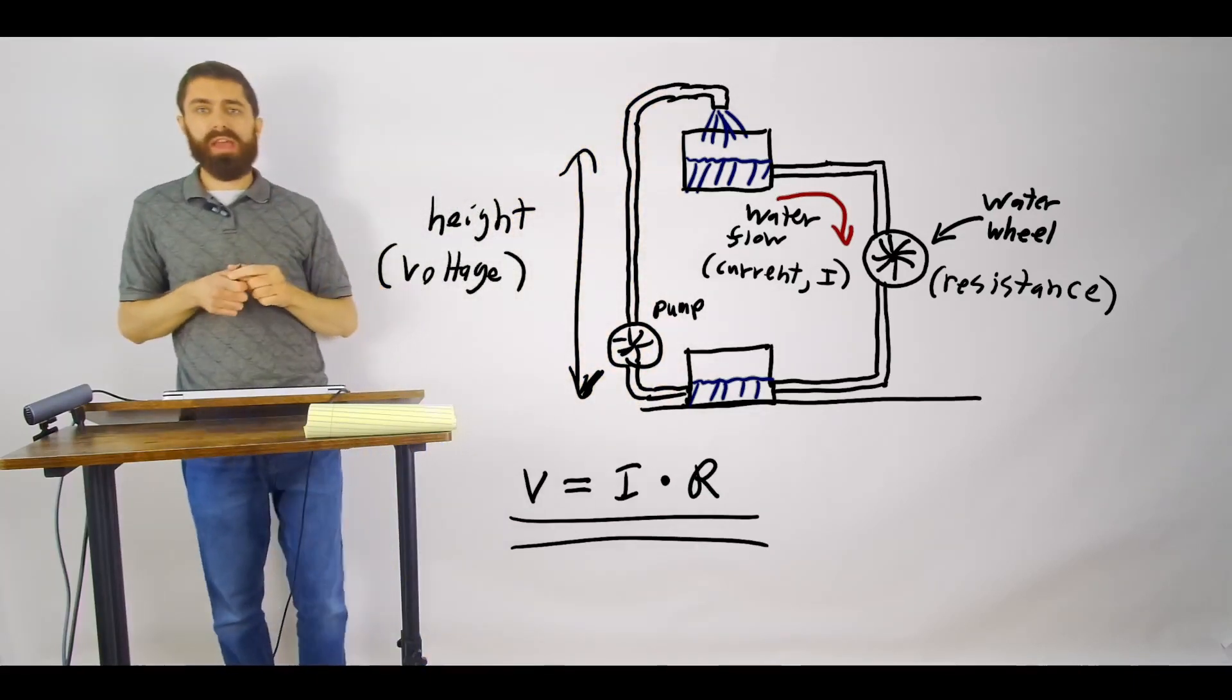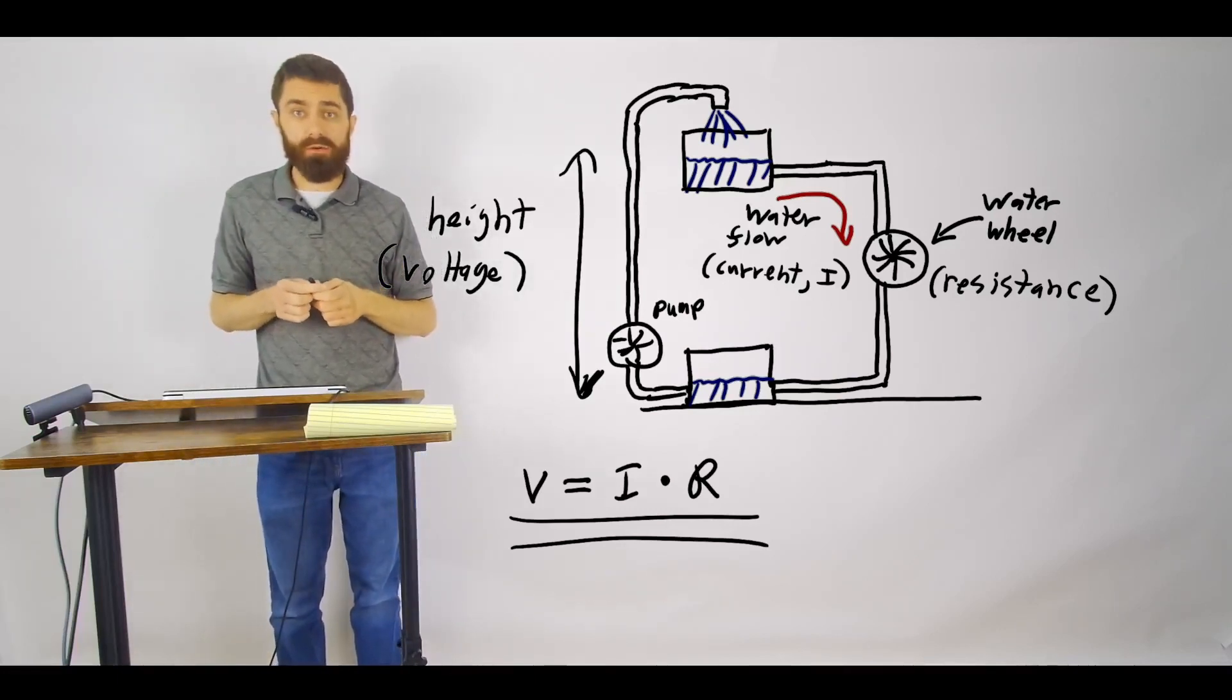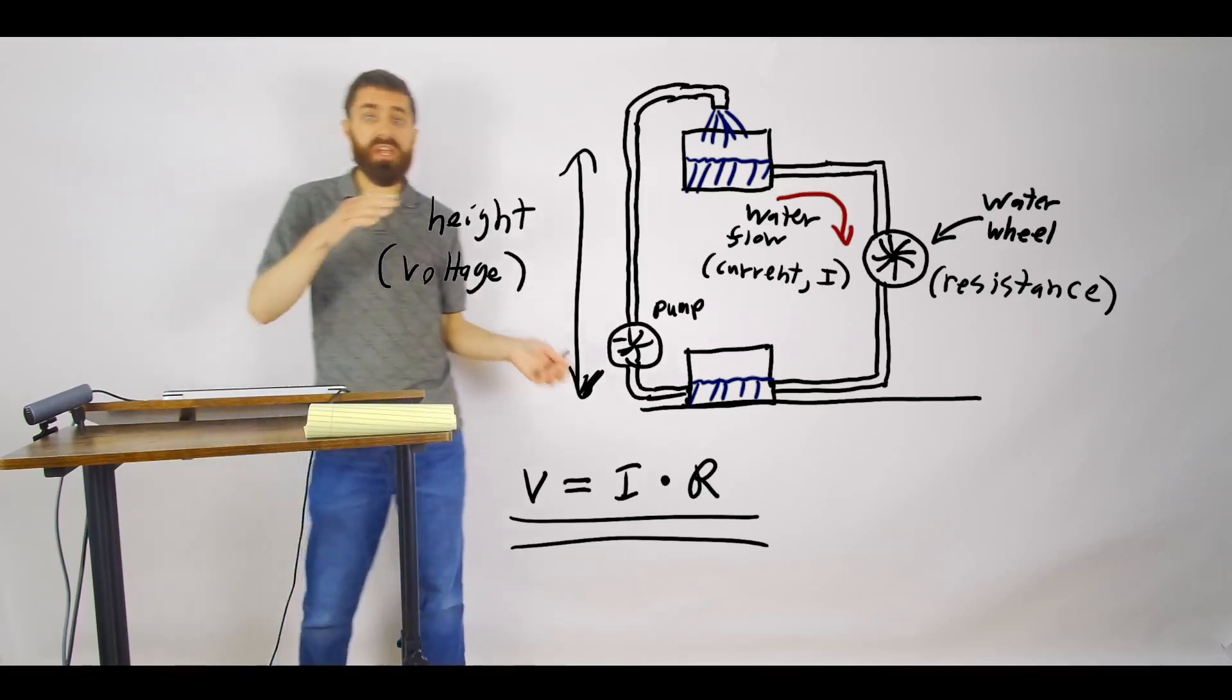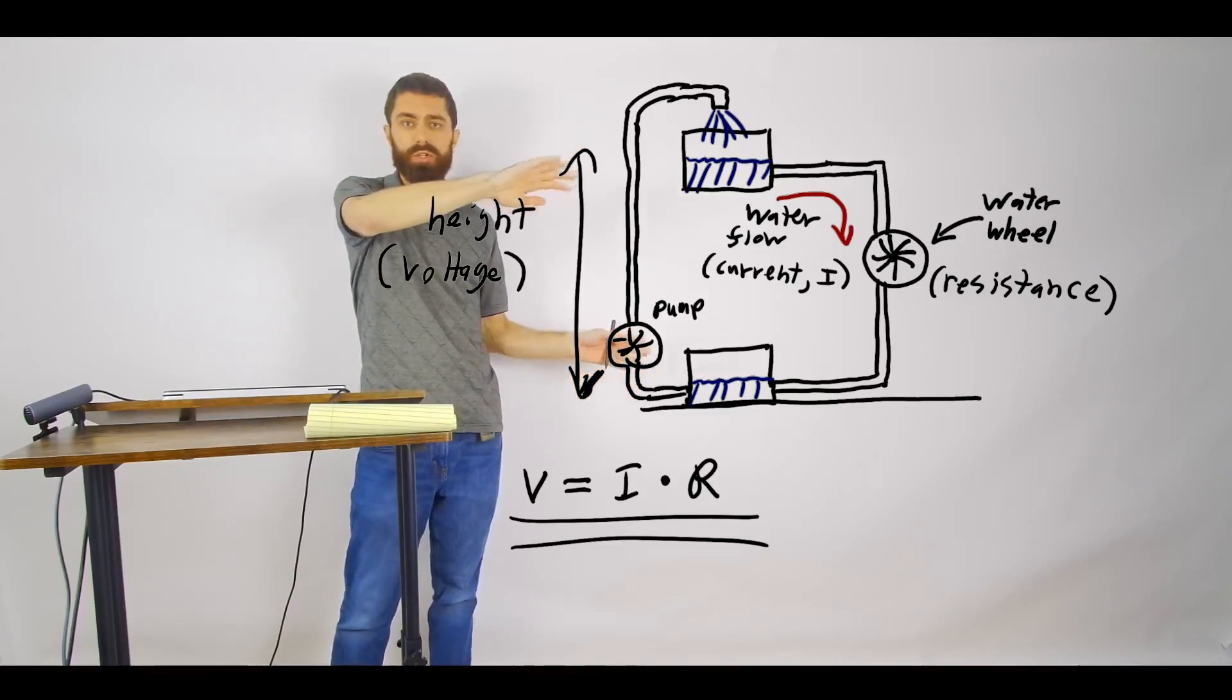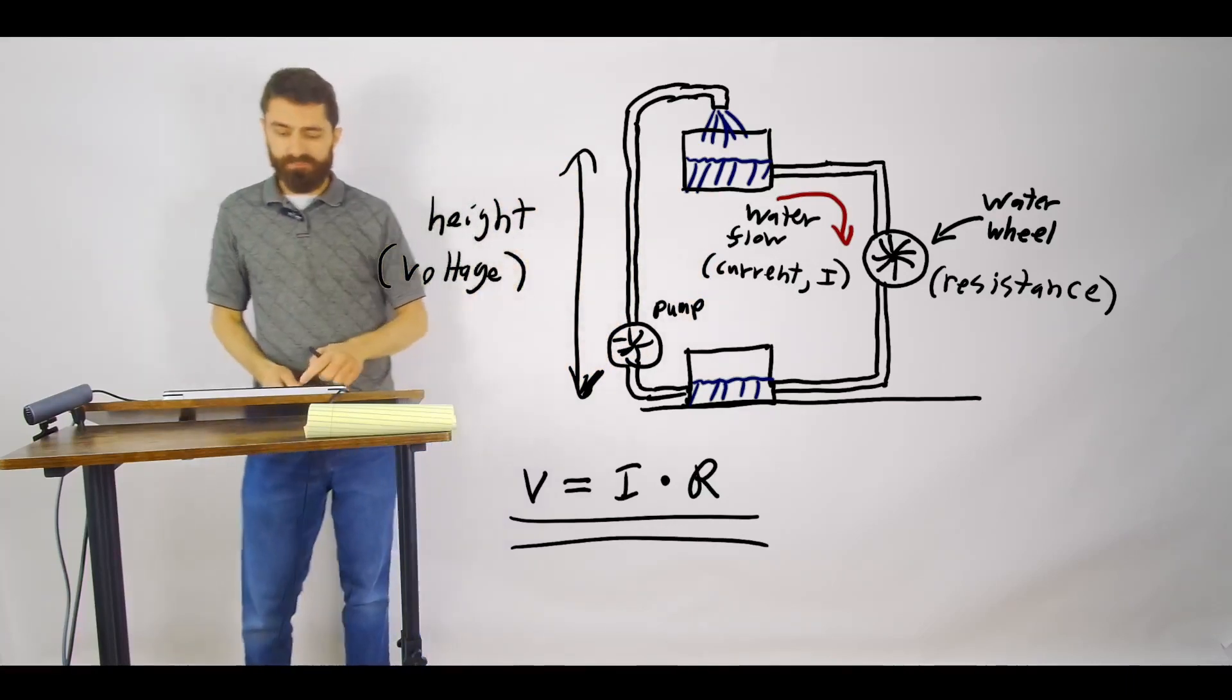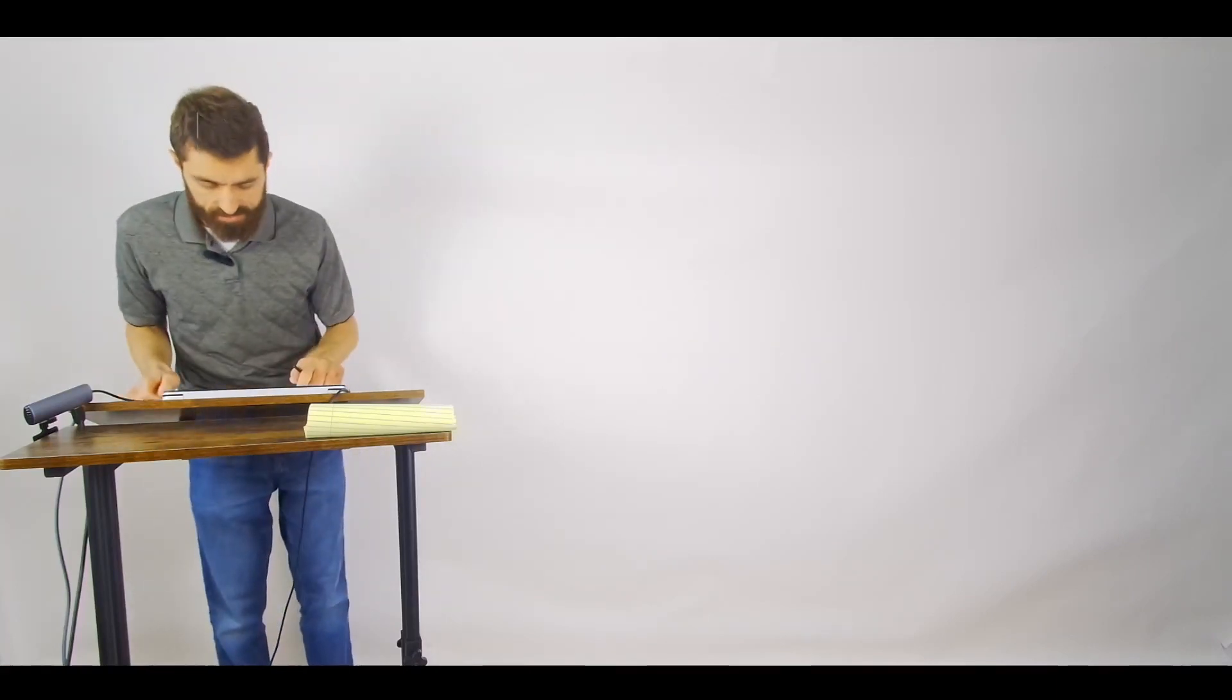A very similar thing happens in electric circuits where basically a battery or a voltage source is basically a continual, it produces a continual difference in potential which causes a continual flow. So let me sketch out a basic electric circuit here.